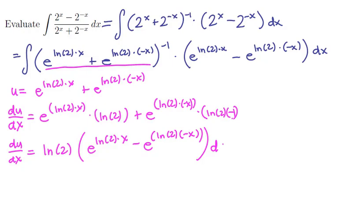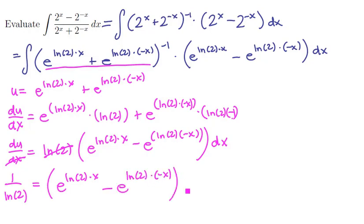Now at this point, we can multiply both sides by dx and then divide both sides by ln of 2. And we have 1 over ln of 2 du equals e to the ln of 2 times x minus e to the ln of 2 to the minus x dx. And so this is the differential we need to fit.